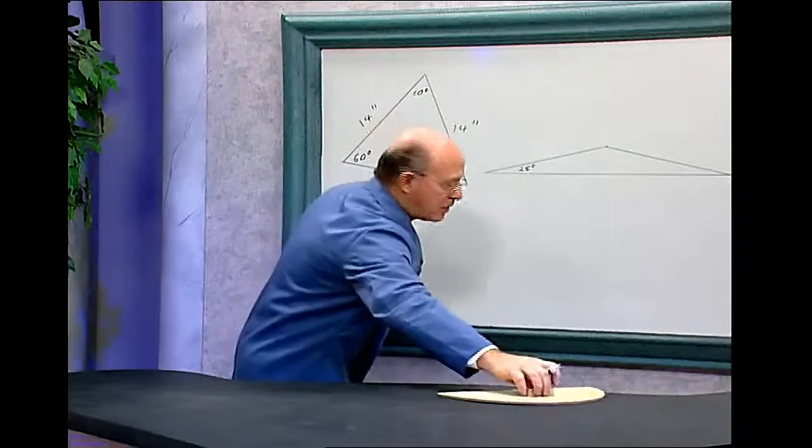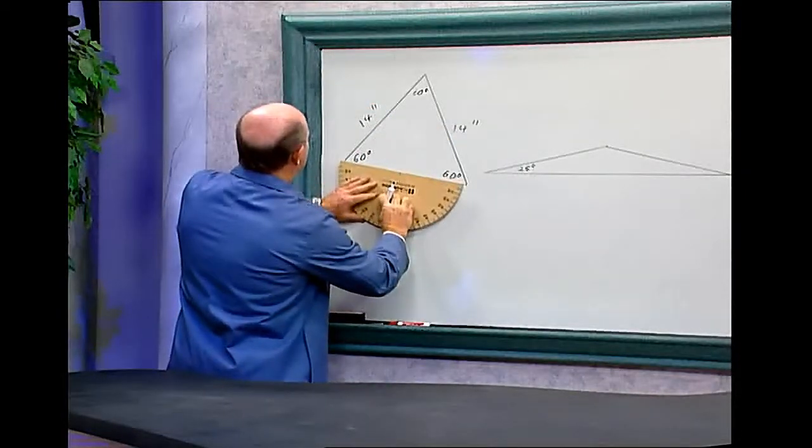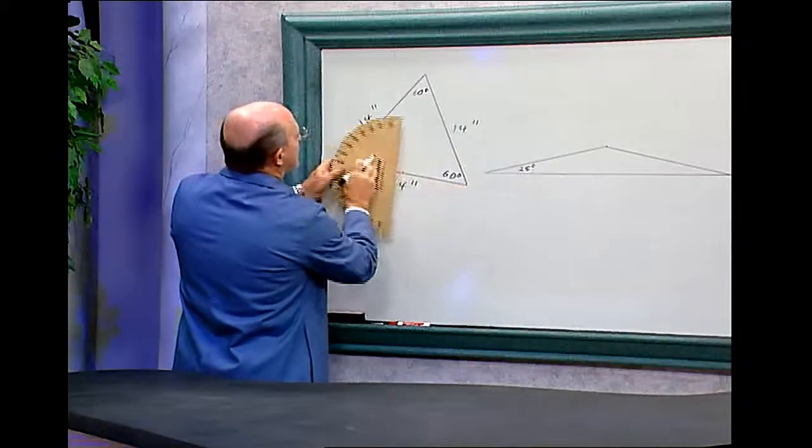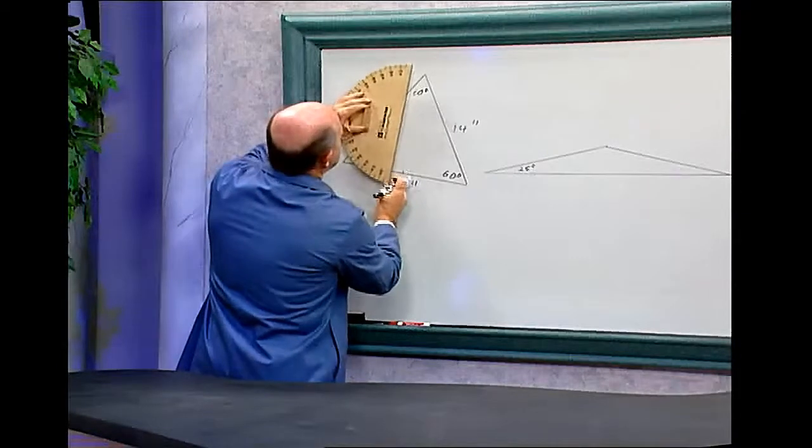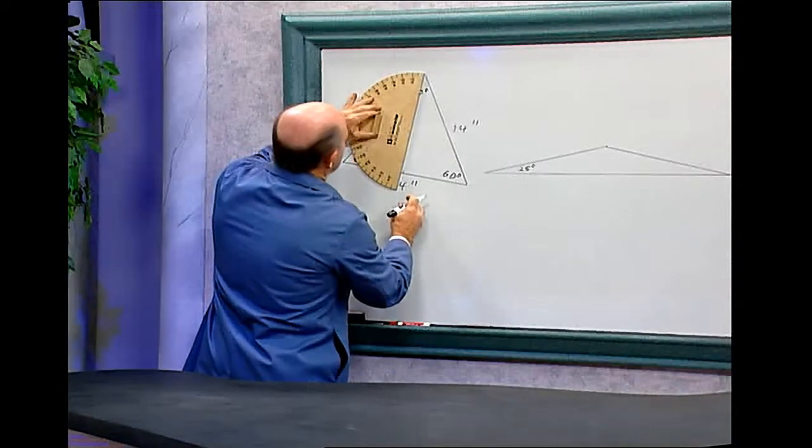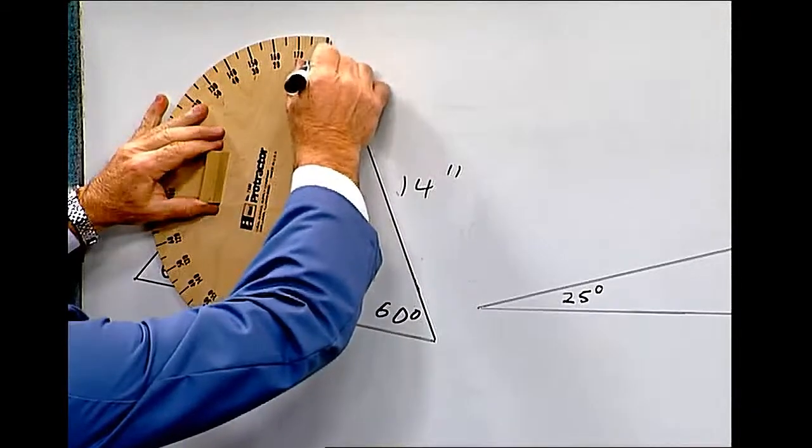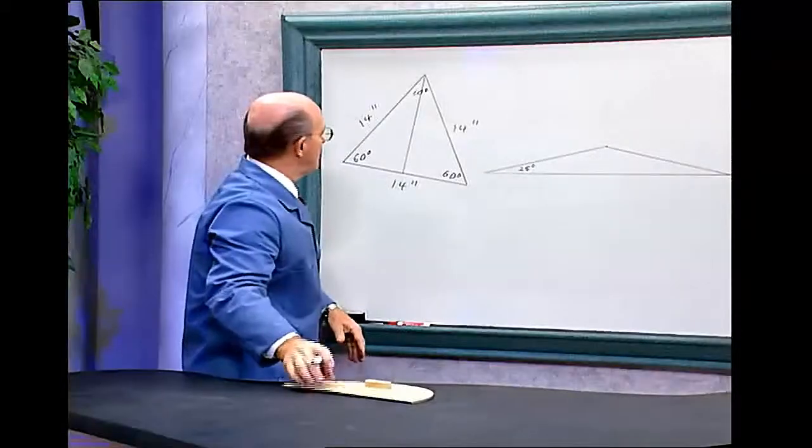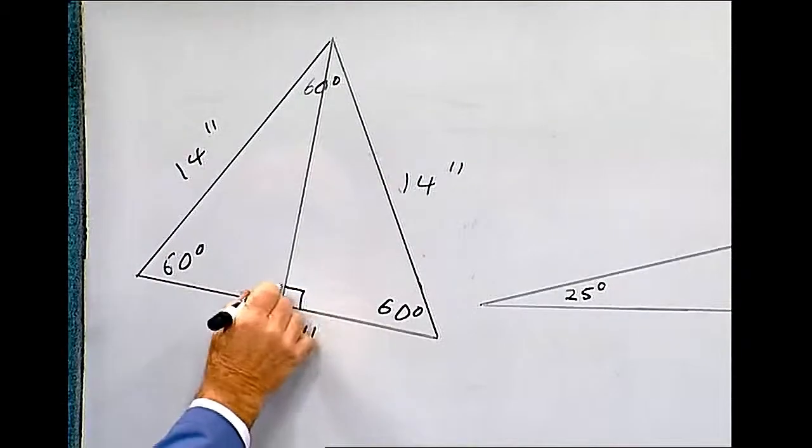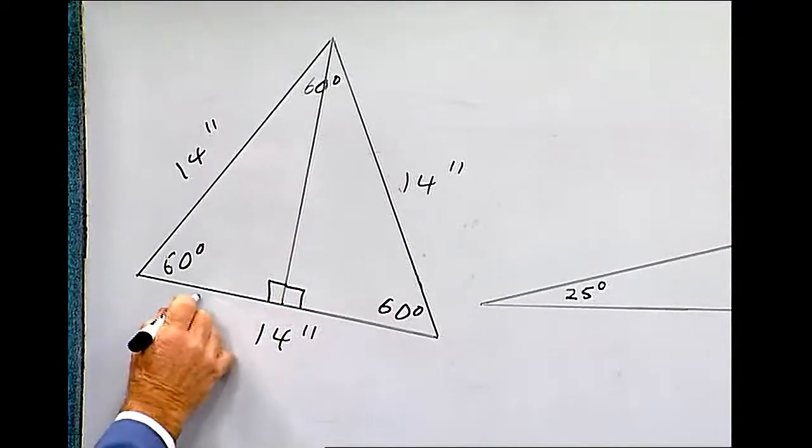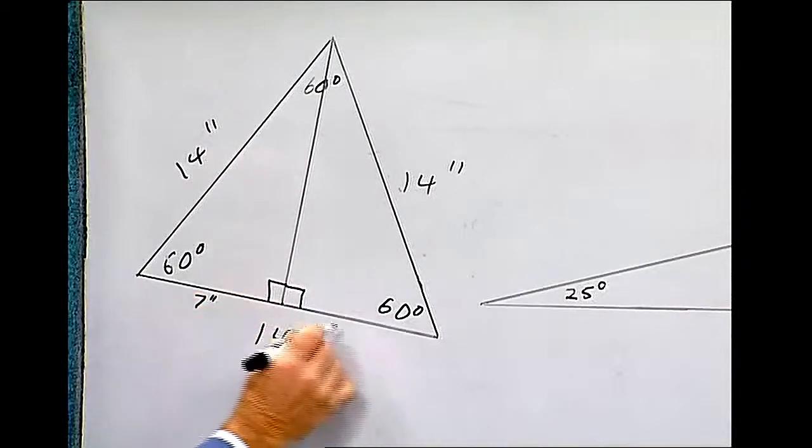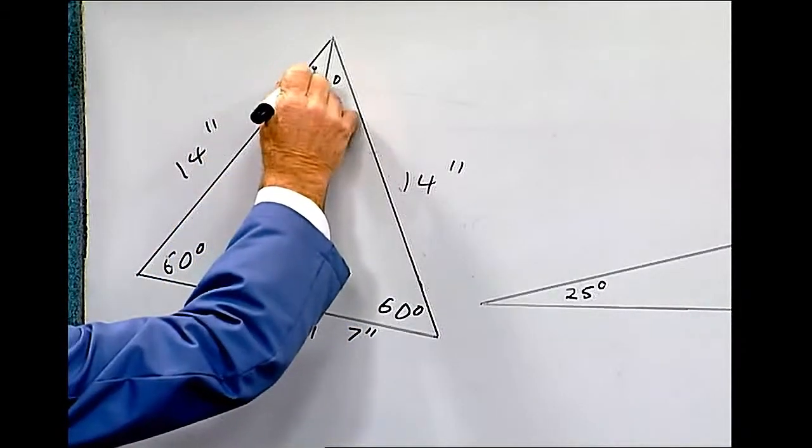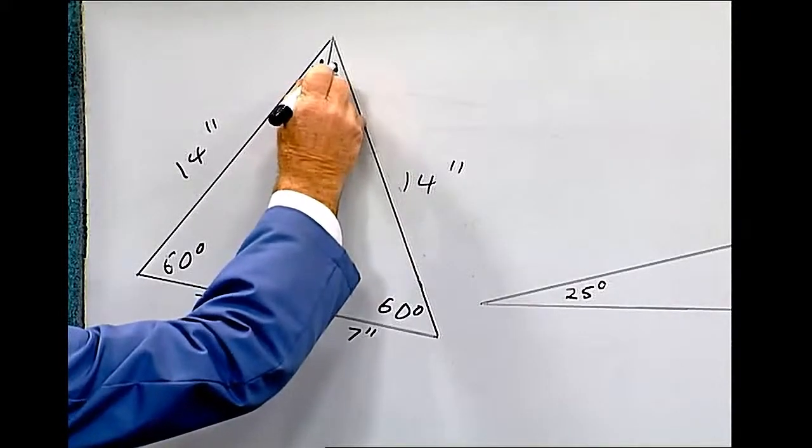If we take the middle of this equilateral triangle I drew with this protractor, there's a line conveniently here. This will bisect that right down the middle. This will be 90 degrees. We know this is 7 inches and this is 7 inches, and since this is in the middle, this is 30 degrees and this is 30 degrees.